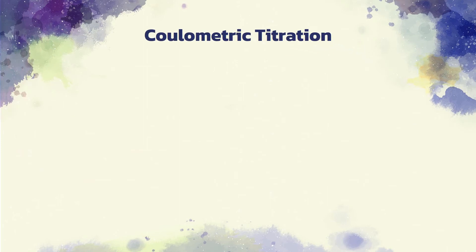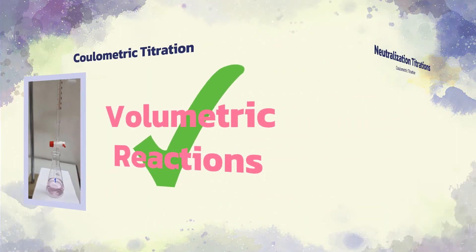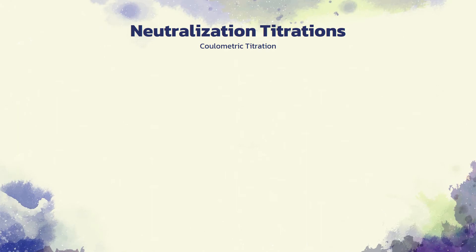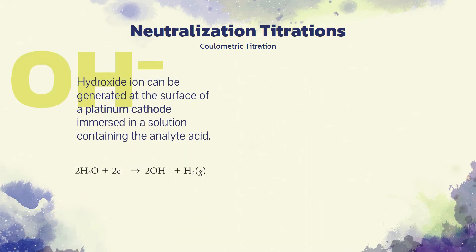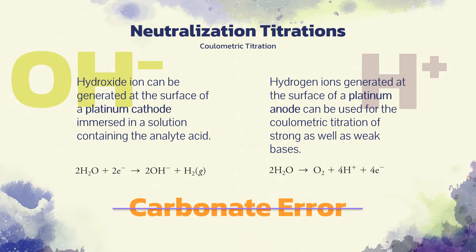Now, we go over to the applications of coulometric titration. As reported in many literatures, coulometric titrations have been developed for all types of volumetric reactions. For example, in neutralization titrations, hydroxide ion can be generated at the surface of a platinum cathode immersed in a solution containing the analyte acid. Whereas hydrogen ions generated at the surface of a platinum anode can be used for the coulometric titration of strong as well as weak bases. Coulometric titrations of acids are much less susceptible to the carbonate error encountered in volumetric methods.